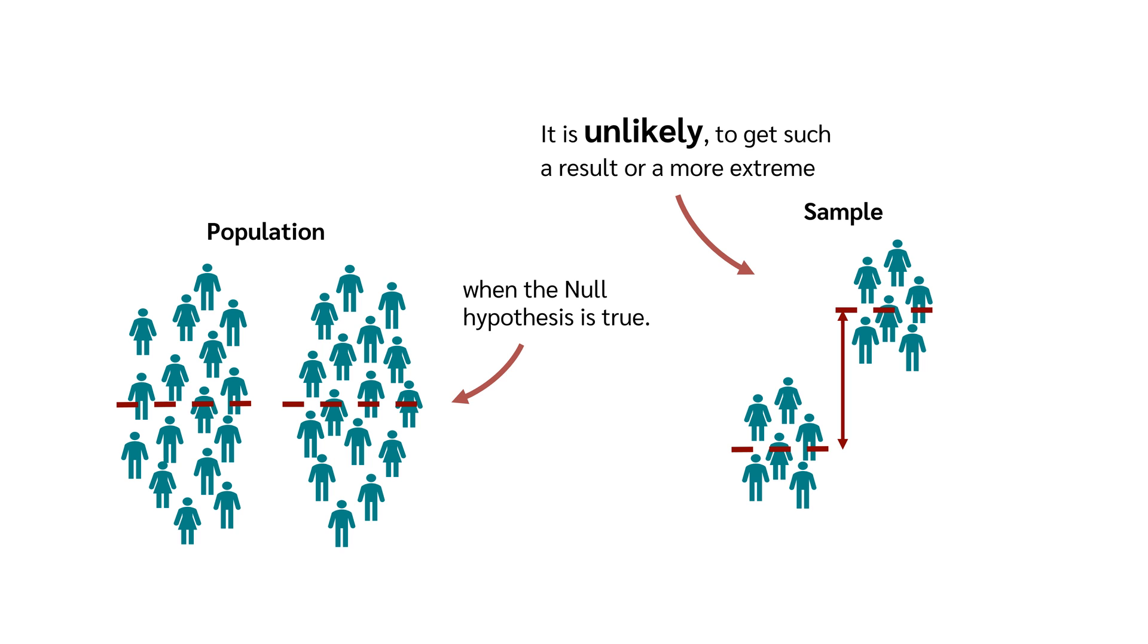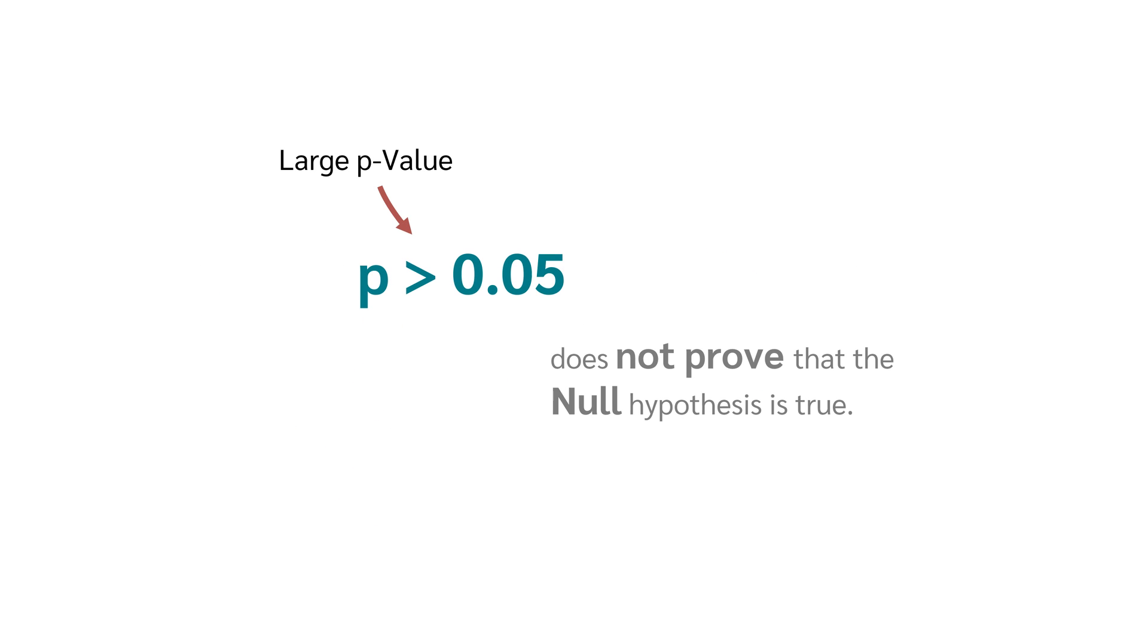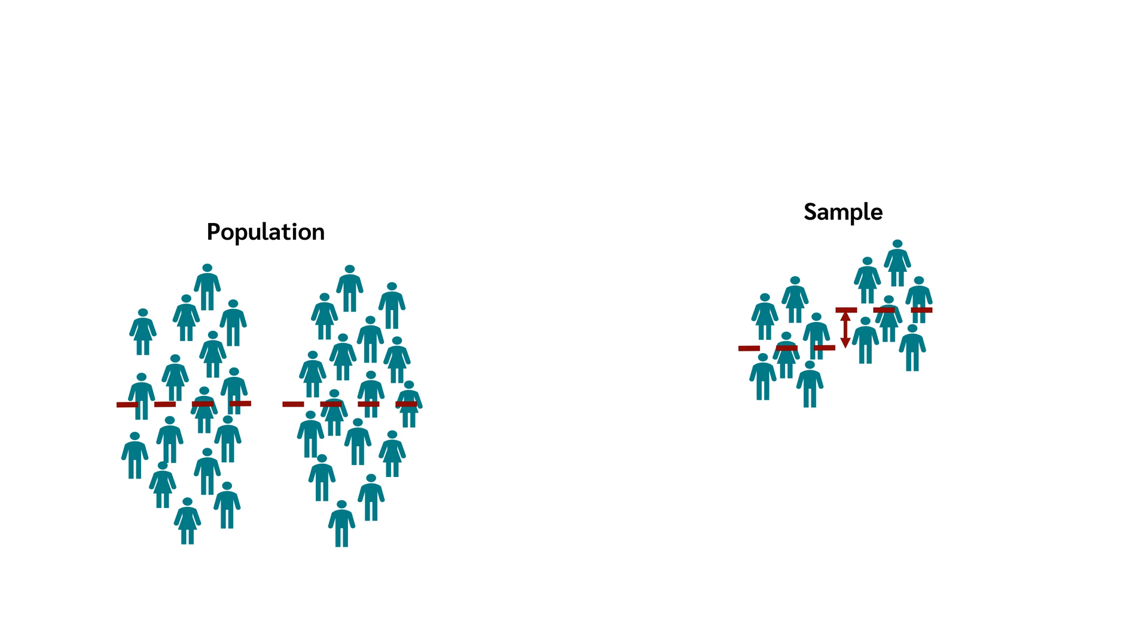And again, if the null hypothesis is true, there is no difference in a population. And the other way around, a large p-value does not prove that the null hypothesis is true. It is only saying that it is likely to get such a result or a more extreme when the null hypothesis is true.